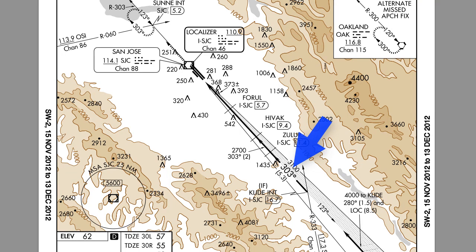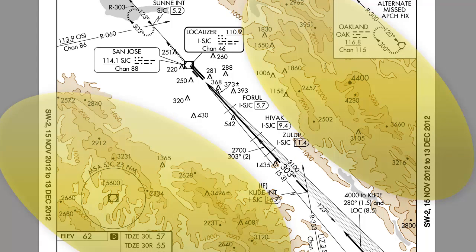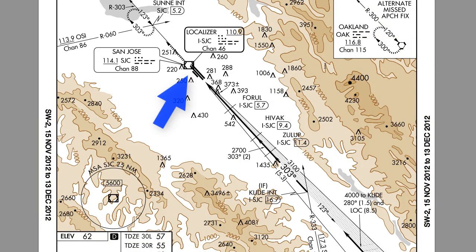The approach course is 303 inbound on this ILS approach. We can see the terrain in brown on either side of the approach corridor, the nav aids for the approach.